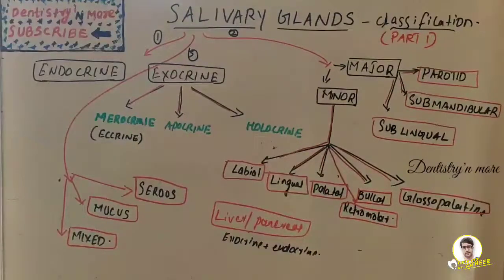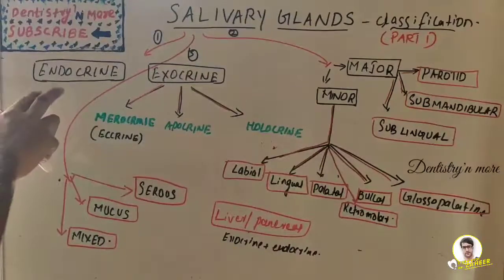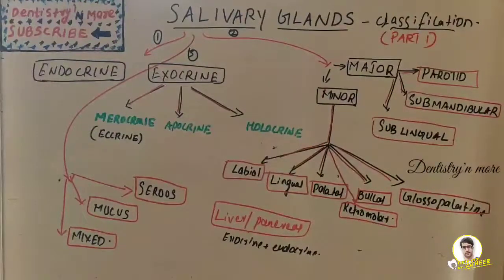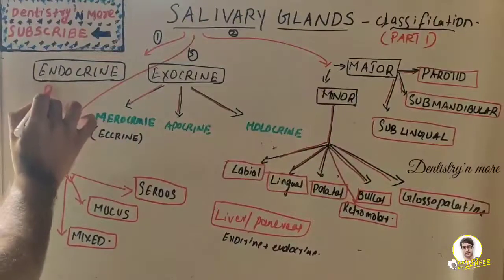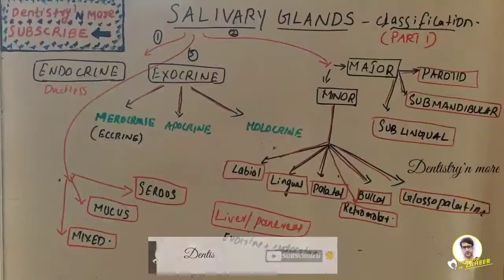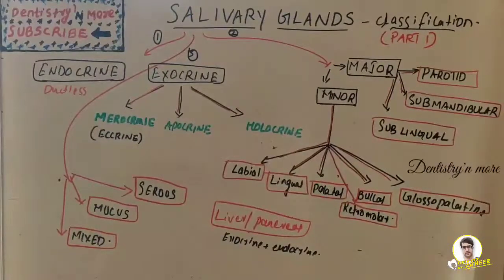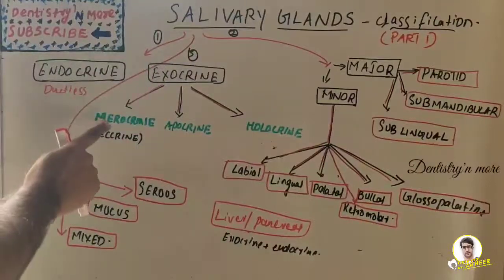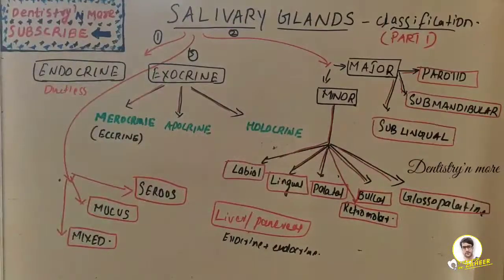We'll start with classification terminology. Any gland is divided into endocrine or exocrine glands. Endocrine glands secrete their products through the basal lamina — they do not have a duct system, so they are ductless glands. Exocrine glands, on the other hand, secrete their products through a duct, and this group can be further divided into merocrine, apocrine, and holocrine.